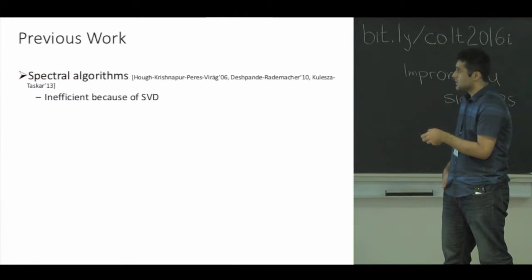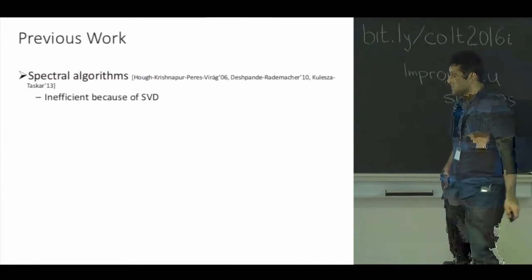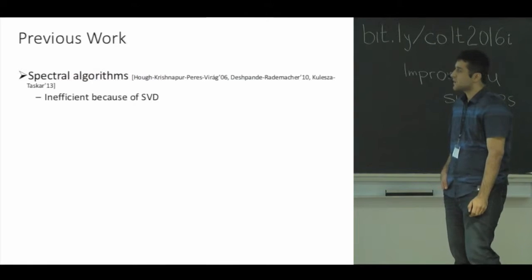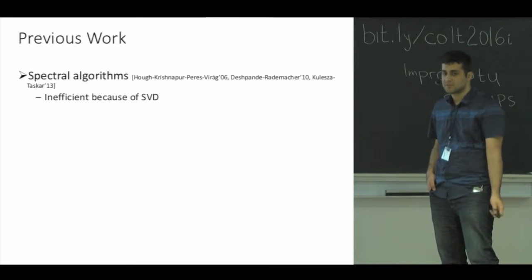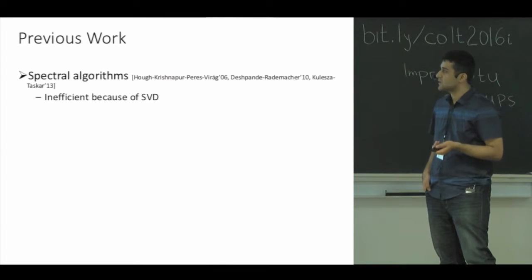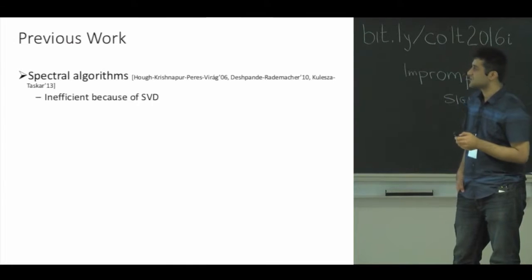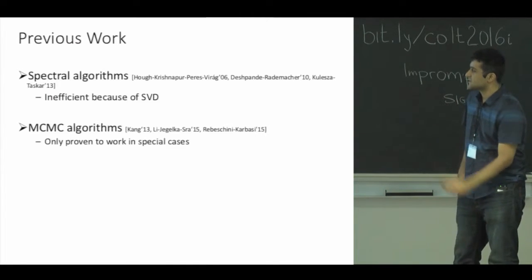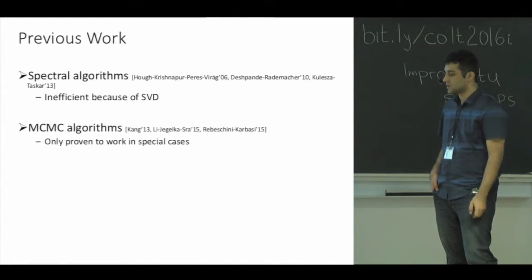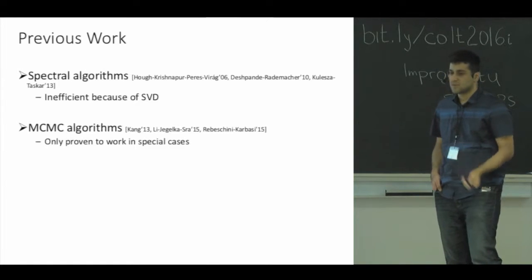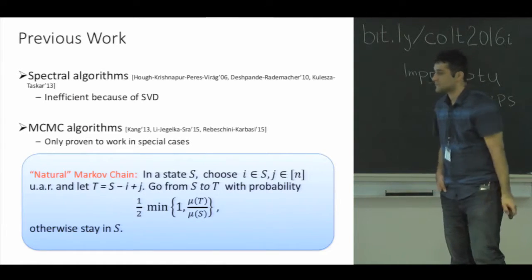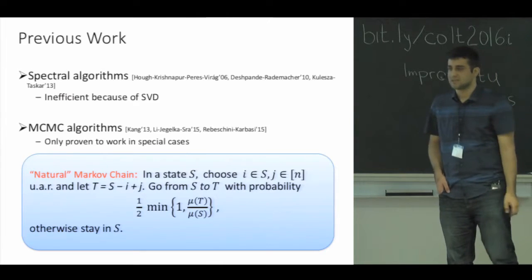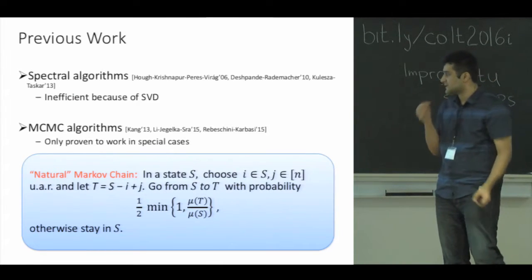Let me quickly mention some prior work on this problem. The first type of algorithms proposed for this problem were spectral algorithms, but the common issue with this problem is that they typically require eigendecomposition, which makes them inefficient for large sets. Later, people suggested using MCMC methods for this problem, but prior to our work, the corresponding Markov chain was proven to be rapidly mixing only in special cases. Here we consider the natural Markov chain for this problem and prove it's rapidly mixing in general.